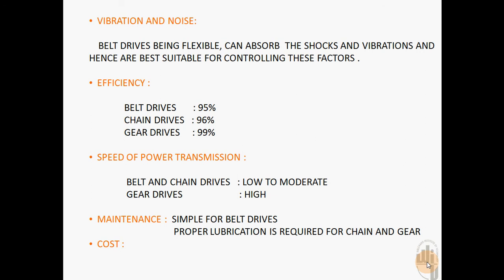The next factor considered is speed of power transmission. Belt and chain drives are used for low to moderate power transmission speeds, whereas gear drives can be used for power transmission at higher speeds as well.